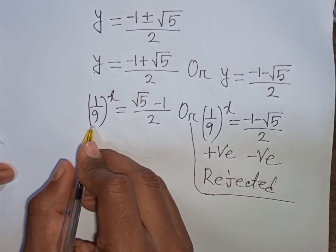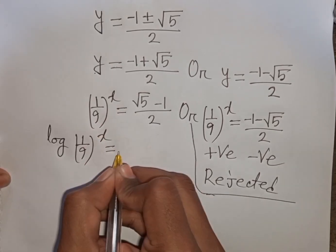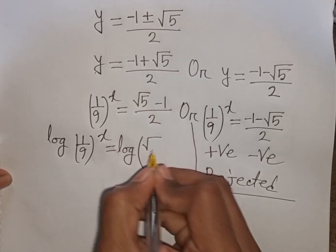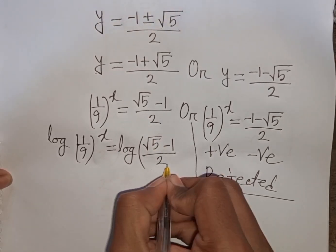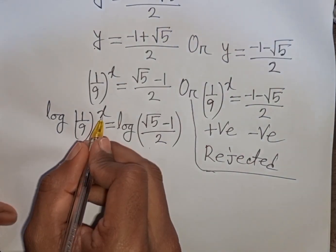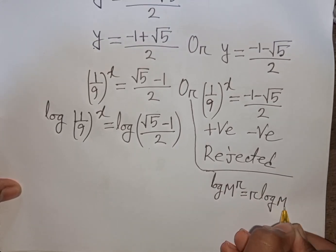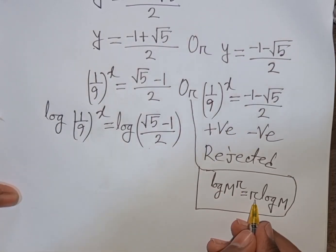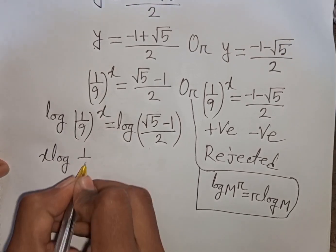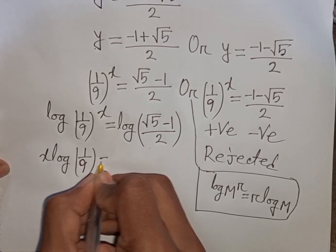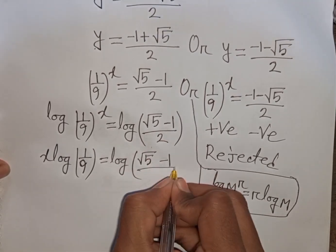Now we take log of both sides: log[(1/9)^x] = log[(√5 − 1)/2]. Using the log power rule — log(m^r) = r·log(m) — the power x moves to the front: x·log(1/9) = log[(√5 − 1)/2].